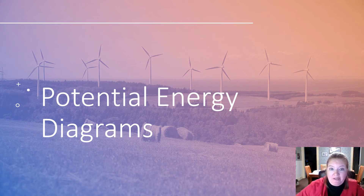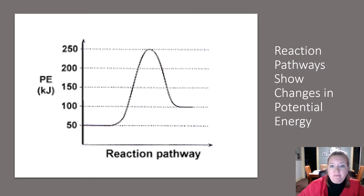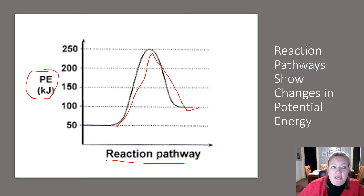Let's talk potential energy diagrams. Potential energy diagrams show the reaction pathway. In a potential energy diagram, the pathway shows changes in potential energy — you can see it's labeled with potential energy. The x-axis may say reaction pathway or time, and as the reaction begins and proceeds, there are changes in potential energy along the way.